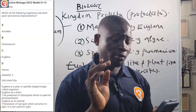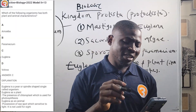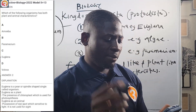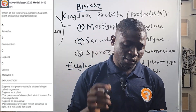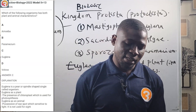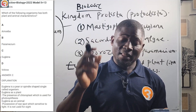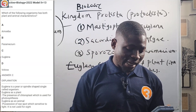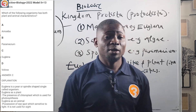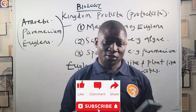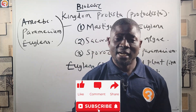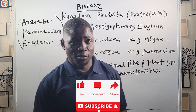One more question: a 2022 question asks which organism has both plant and animal characteristics. Options are Amoeba, Paramecium, Euglena, and Volvox. The answer is Euglena, as it has both animal-like and plant-like characteristics. Please like, subscribe, and share this video, and I'll see you in the next episode.